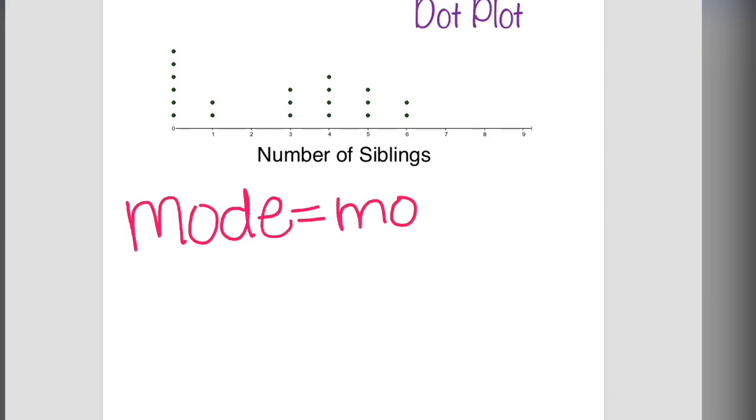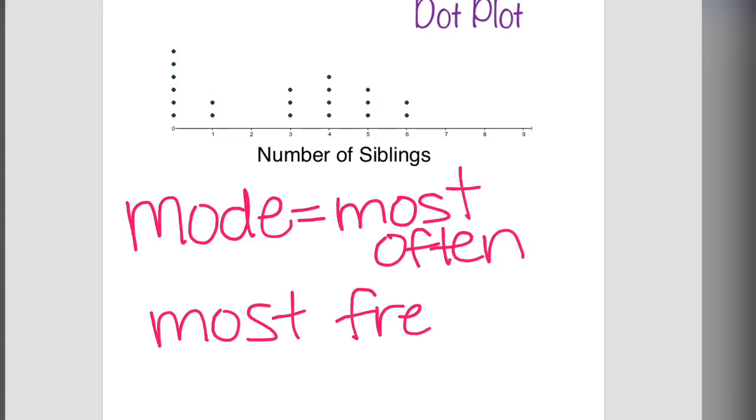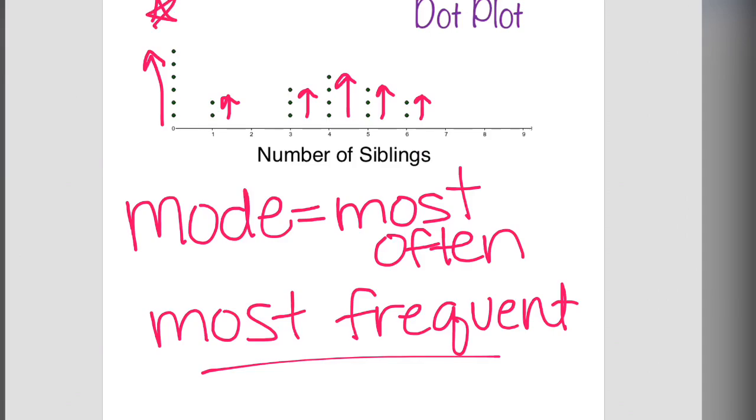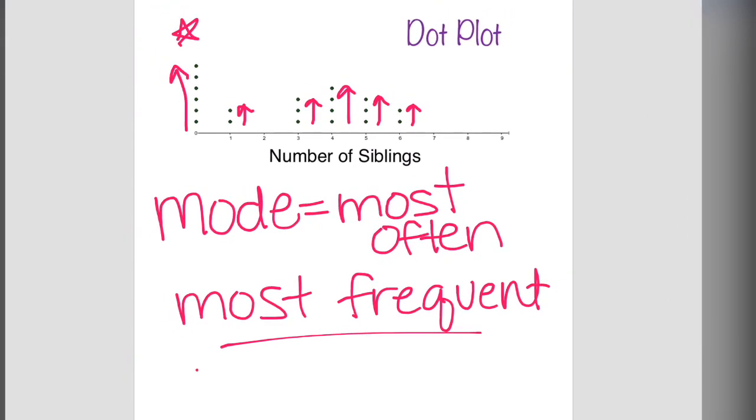So now let's talk about mode. Mode can be thought about as the most often or the most frequent answer. I'm going to draw arrows just to kind of show how each one goes up. The highest one or the most frequent is zero, so the mode of this data is zero.